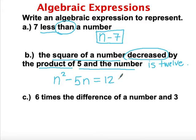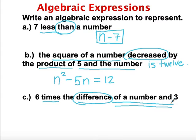Let's look at that third example. It says six times the difference of a number and three. I always underline or circle my key mathematical terms. I have six times the difference — another subtraction problem. Because it says 'the difference of a number and three,' I need to do that part first: n minus 3. Then I take all of that times six, putting the six on the outside with grouping symbols. That gives us the expression 6 times the quantity of n minus 3.